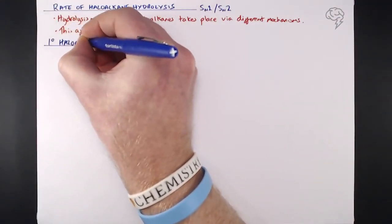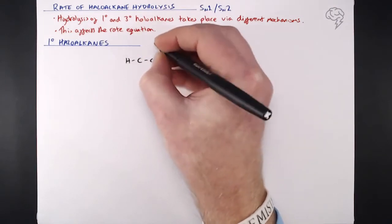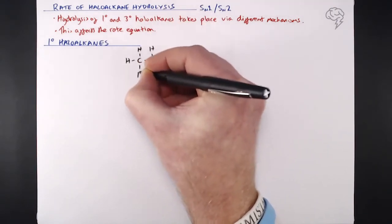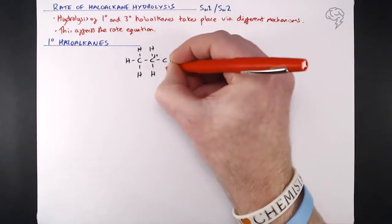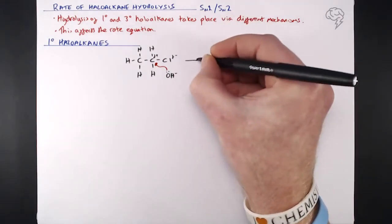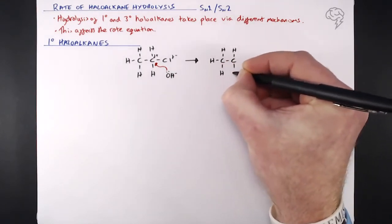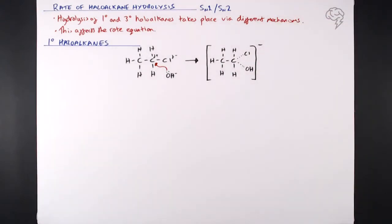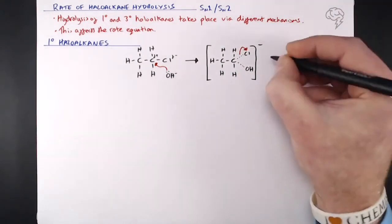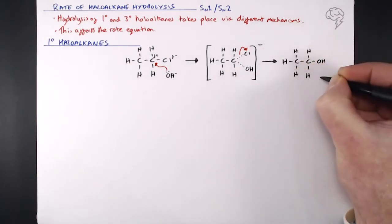First up, primary halo alkanes. I'm going to draw up the entire mechanism using chloroethane (C₂H₅Cl) as my primary halo alkane. In the full displayed formula, I have a delta-plus on the carbon and delta-minus on the chlorine. The hydroxide ion, with its lone pair and negative charge, attacks that delta-positive carbon. We get an intermediate in square brackets — the C₂H₅ remains the same, but for that one split second both the chlorine and the OH are attached to that end carbon. Then the chlorine-to-carbon bond breaks by heterolytic fission, leaving the OH attached and giving us ethanol, with Cl⁻ as a byproduct.